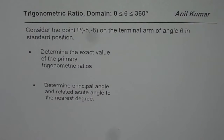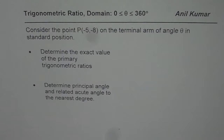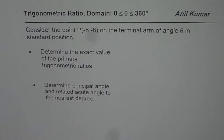I am Anil Kumar and in this video, we will further explore trigonometric ratios in the domain 0 to 360 degrees. The question is: consider the point P(-5, -8) on the terminal arm of angle theta in standard position. Determine the exact value of primary trigonometric ratios and determine the principal angle and related acute angle to the nearest degree.